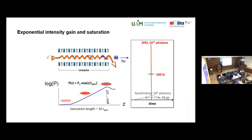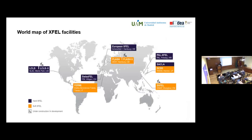The result: a synchrotron produces about a million photons in 100 picoseconds, while an XFEL delivers 10¹² photons in 100 femtoseconds — comparable to an optical laser. Today there are a limited number of these machines worldwide: in Europe there are facilities in Italy, Switzerland, and two in Germany; in Asia there is one each in Japan, Korea, and one being built in China.